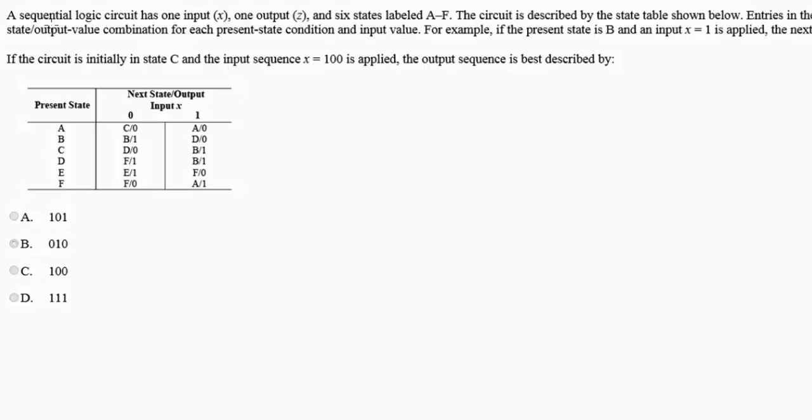I wasn't able to fit that in the screen, but a sequential logic circuit has one input X, one output Z, and six states labeled A through F. So as we can see from the table over here, A through F.